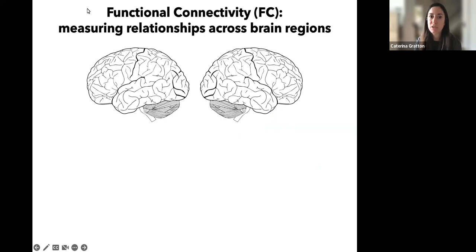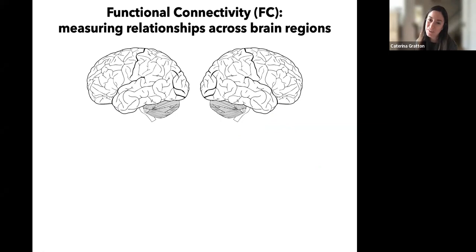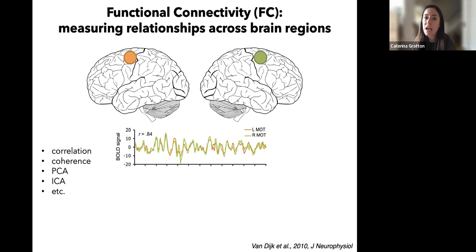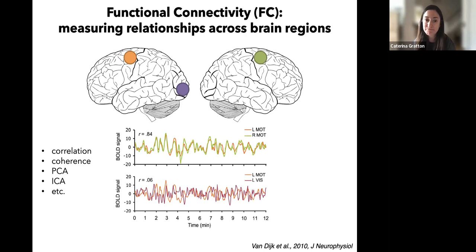When we measure brain networks, we're typically measuring a relationship in activity patterns across different brain regions — some sort of statistical association, often called functional connectivity. A lot of people say, why don't you just call it correlations? That's fair — typically we do measure correlations in the BOLD signal between different brain regions, though you can also use coherence, PCA, ICA, and so forth. For example, the BOLD activity in left and right motor cortex over time looks very similar — highly correlated — whereas a region like left visual cortex shows a much more distinct, lower-correlation pattern.